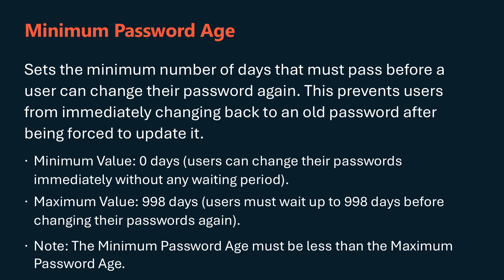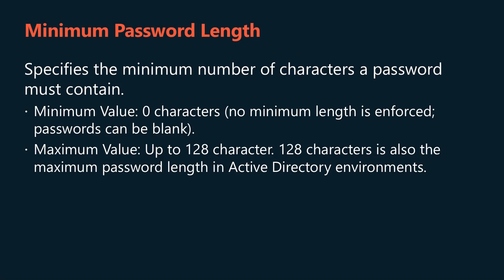The minimum password age policy sets the minimum number of days that must pass before a user can change their password again. This prevents users from immediately changing back to an old password after being forced to update it. The minimum value is zero days, which allows users to change their passwords again immediately without any waiting period. The maximum value is 998 days, and the minimum password age needs to be less than the maximum password age policy setting. As long as you have this set to a couple of days and have a password history set to default, you'll avoid this type of user shenanigan.